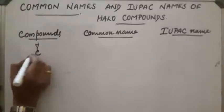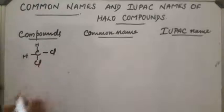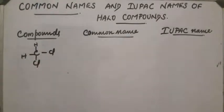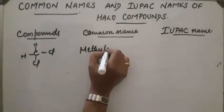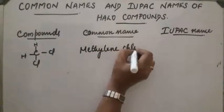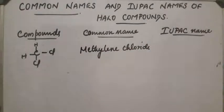Next compound: to one carbon atom we are attaching 2 chloro atoms and 2 hydrogen atoms, giving CH2Cl2. This is a methylene derivative, so the common name is methylene chloride. Two halides are attached to the same carbon.